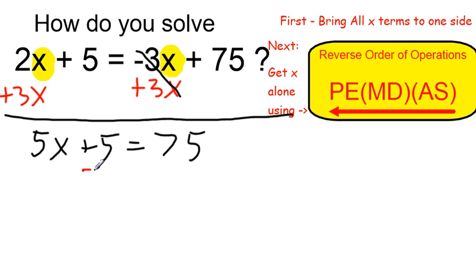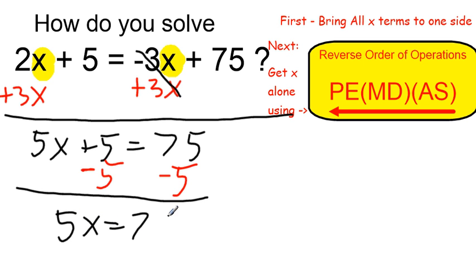I'm going to get rid of the addition first by subtracting 5 on both sides, which leaves me with 5x equals 70.